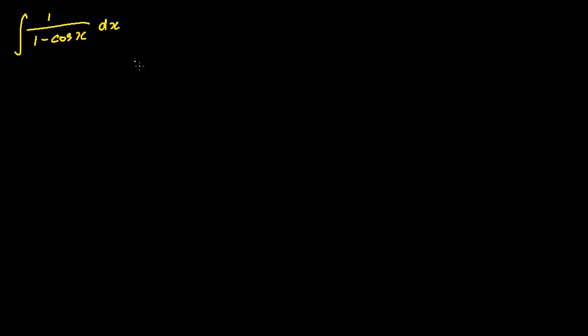But before I do so, if you guys like the solution, please press the thumbs up icon below this video. The first step, what we are going to do is multiply the numerator and the denominator by 1 plus cosine x.